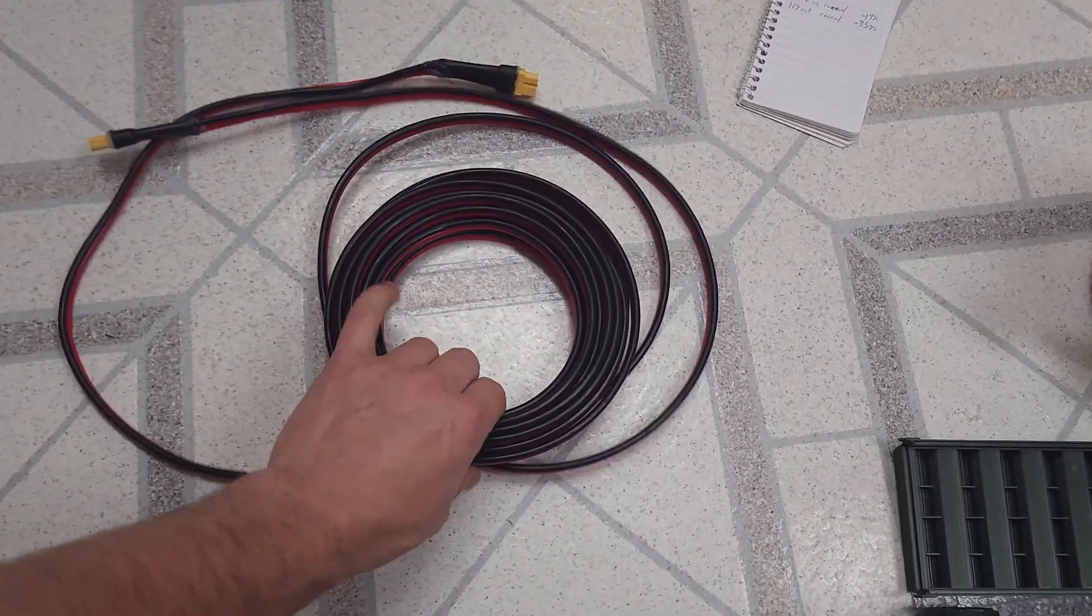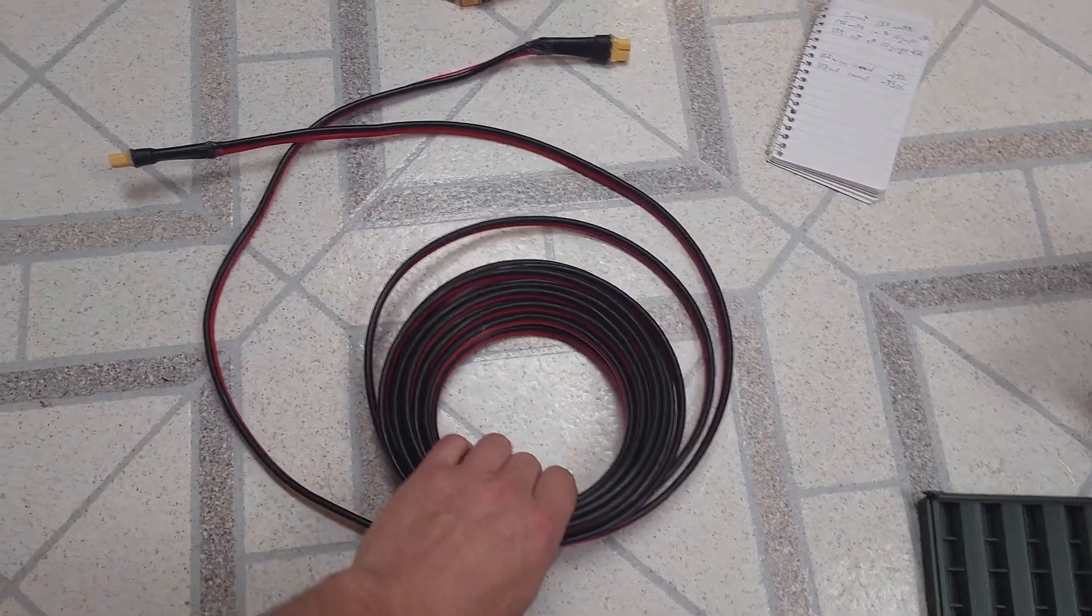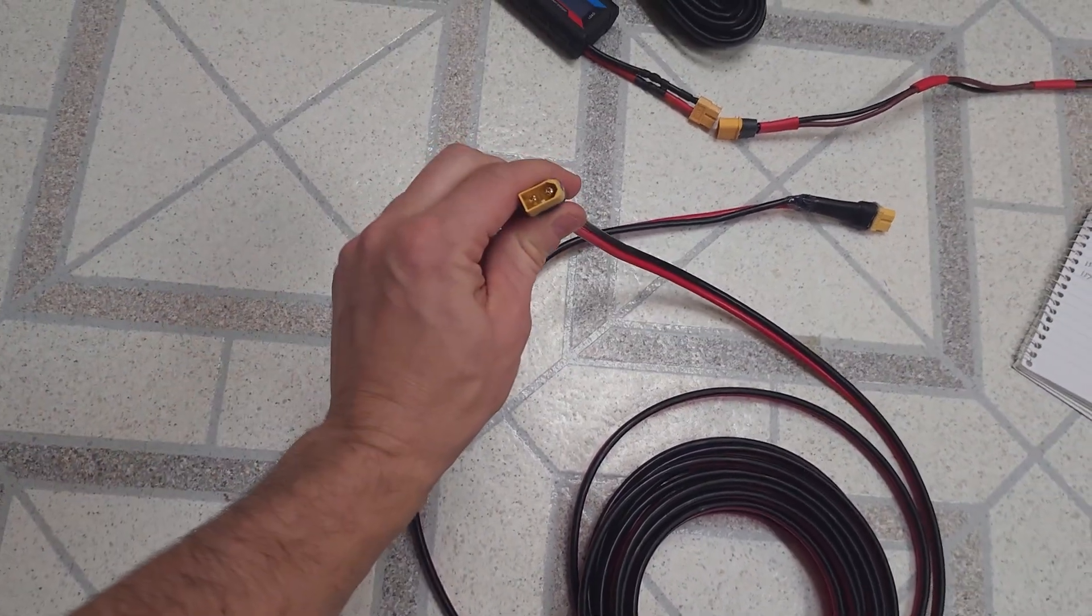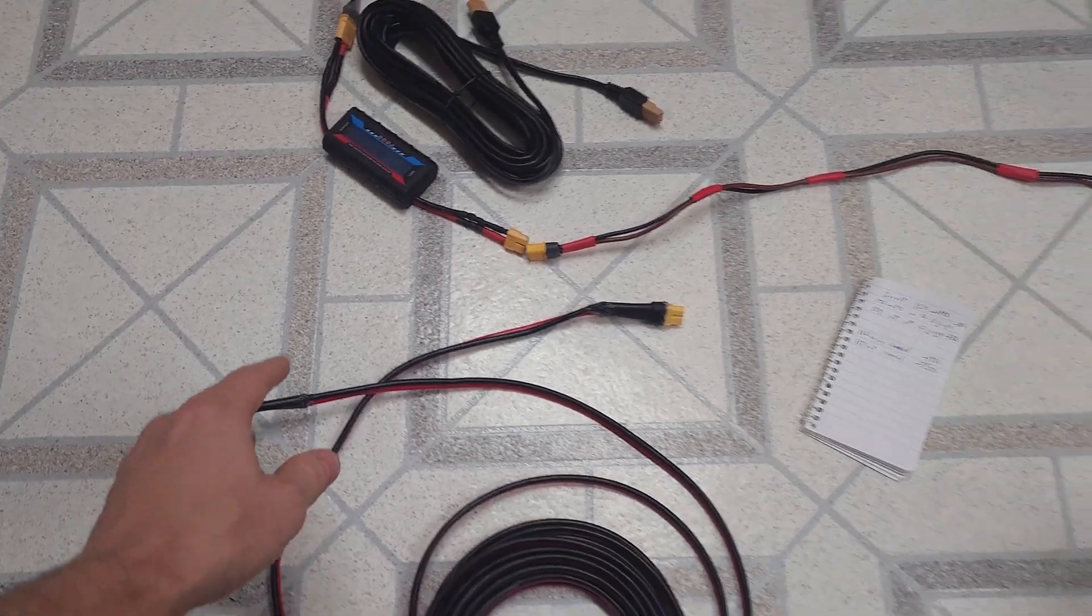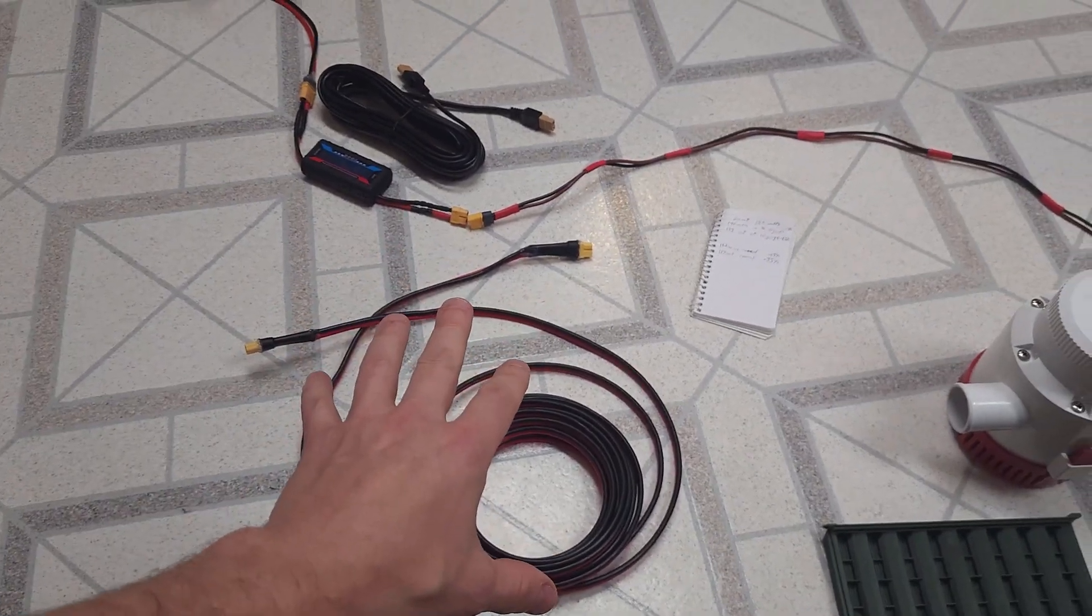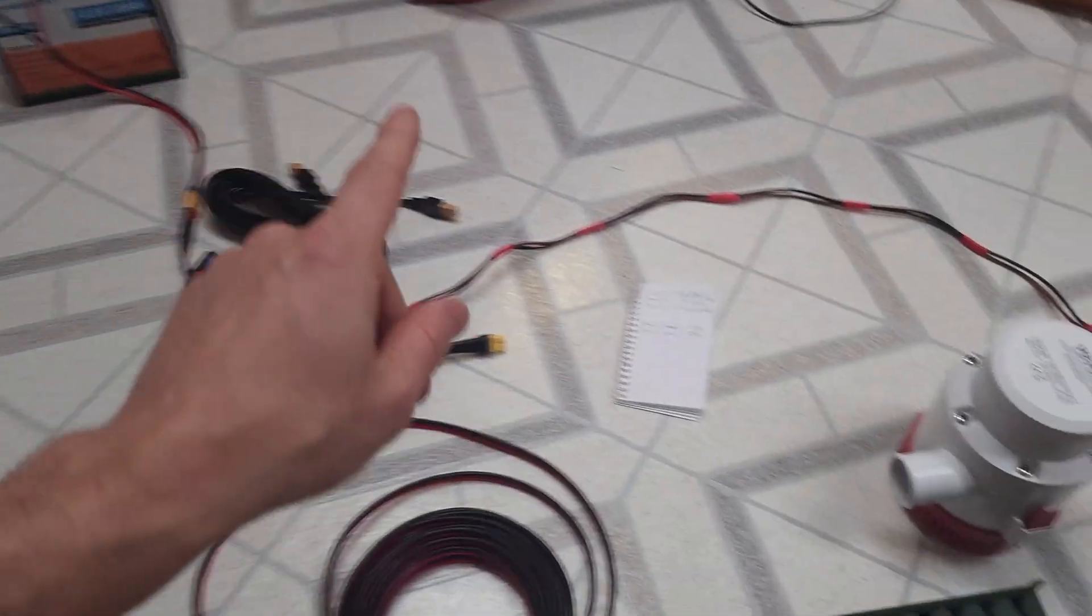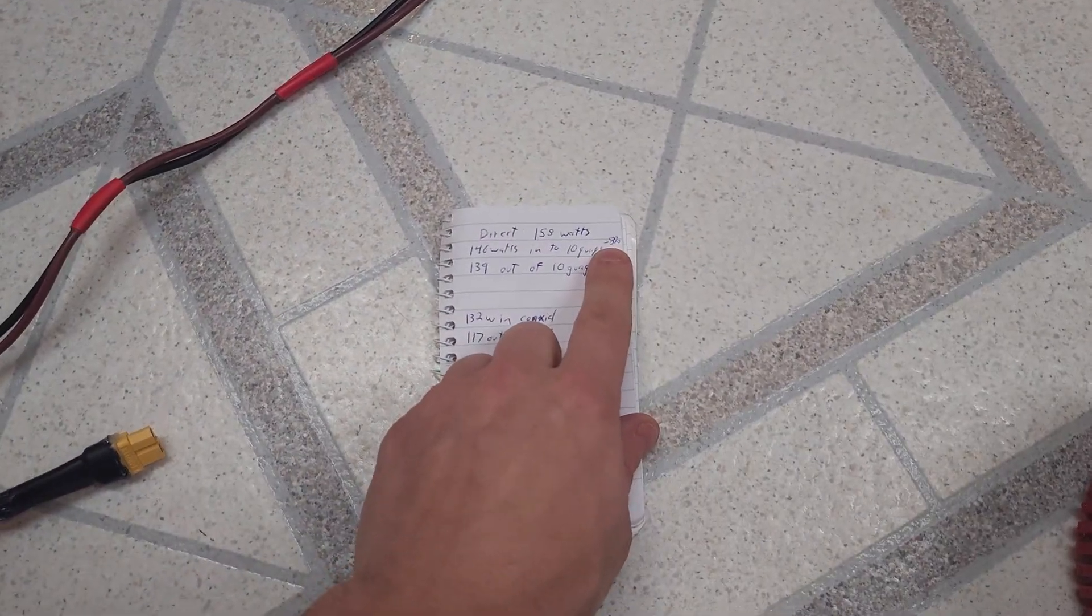Now this is a 25 foot long extension cord, nice heavy 10 gauge cable with these XT60 connectors. When I ran this, I noticed that it actually drew less power from the battery, specifically 8% less from the battery.